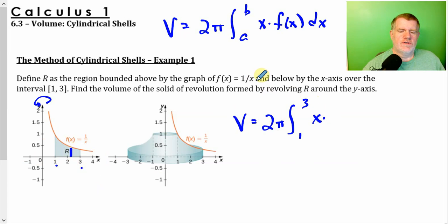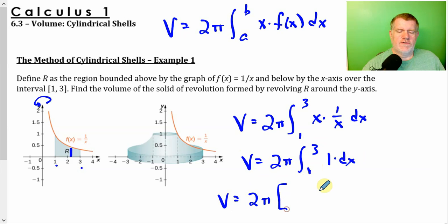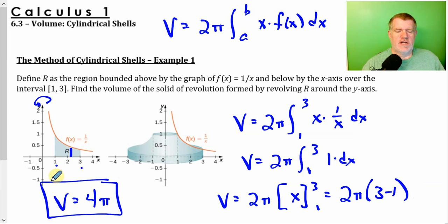x times the function. Well, the function is 1/x dx. That is a very easy integral to solve, because it's just going to be the integral from 1 to 3 of 1 dx. And we'll do this one by hand. Why not? It's been a while. The antiderivative of 1 is x. I'm going to evaluate that from 3 to 1. So we have 2π, 3 minus 1. So that leaves our entire volume for this one would be 4π.